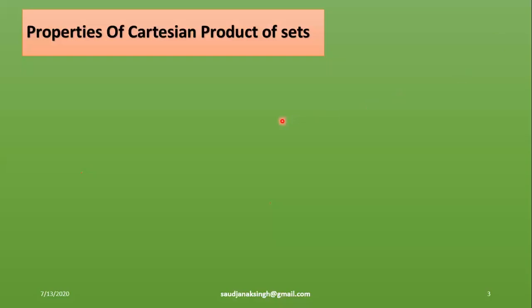Properties of Cartesian product. We begin understanding ordered pairs and Cartesian product. Suppose Jack wants to buy a car and he has decided to buy among three companies, and he prefers the colors red and white. Here we can make two sets.